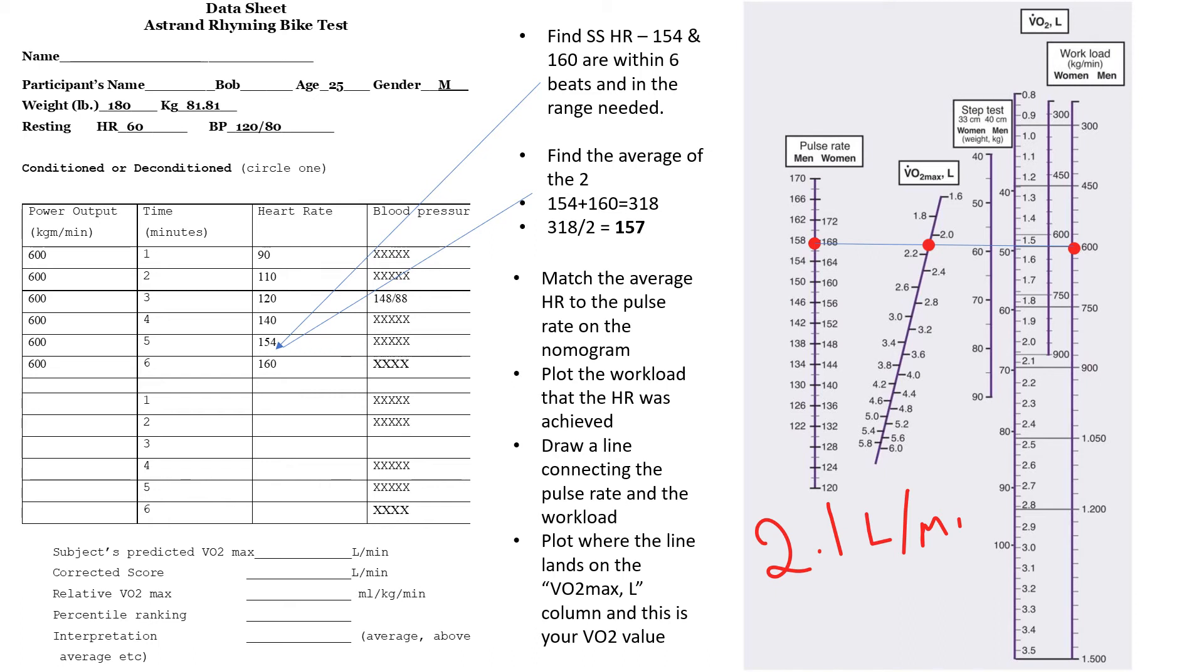And then what you'd want to do is you'd want to go and convert that into a relative VO2 max very quickly. Basically, what you would do with that is you would just multiply the 2.1 times 1,000 and then divide it by 81.81. Because that's the body weight, so essentially you would take the 2.1, multiply it by 1,000, and divide that by 81.81. And that would give you 25.6 mLs per kg per minute.